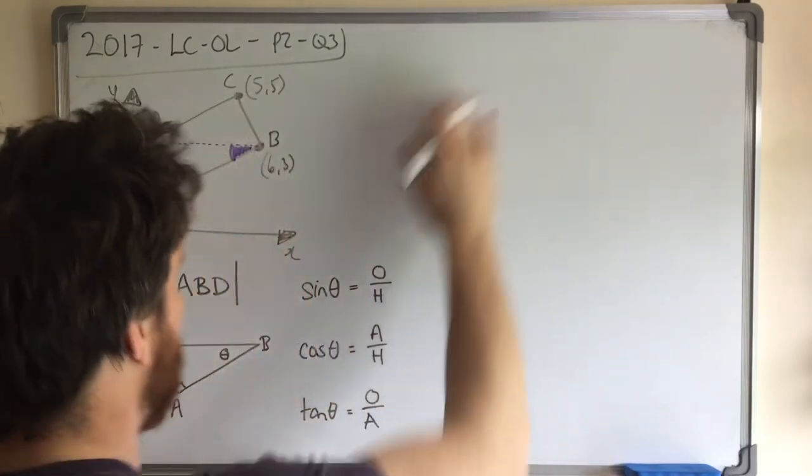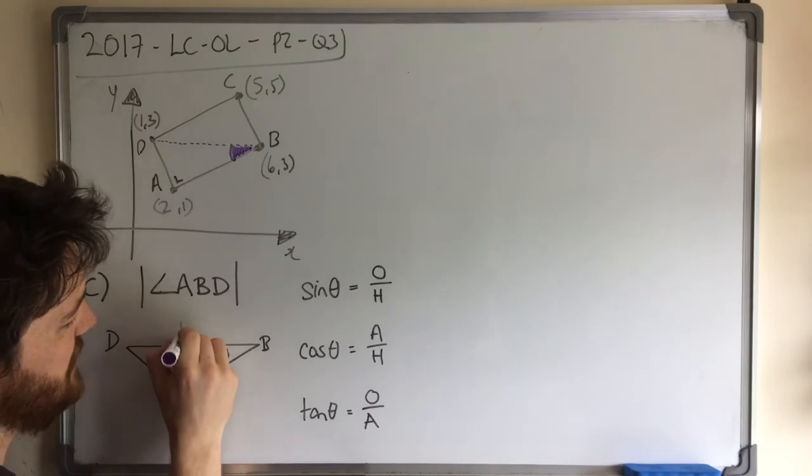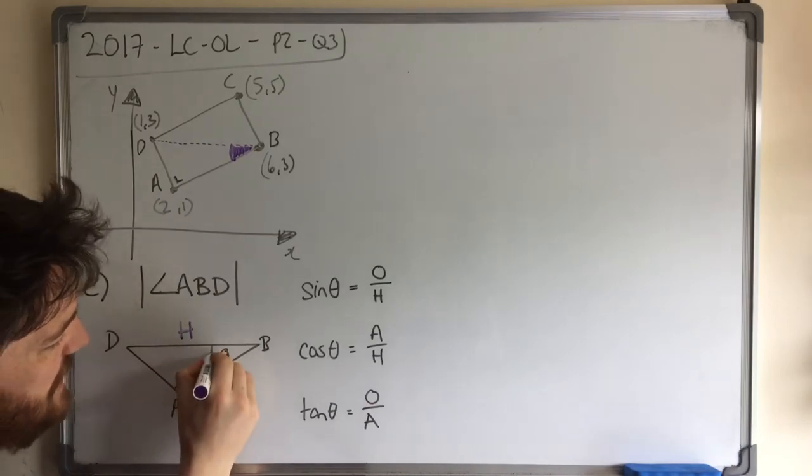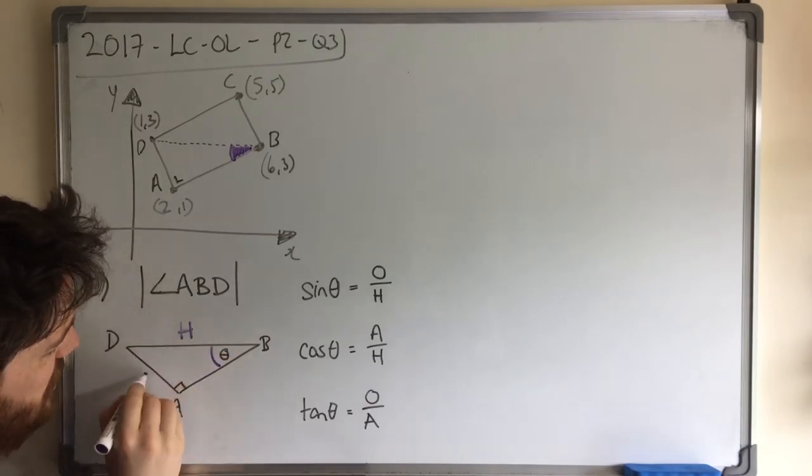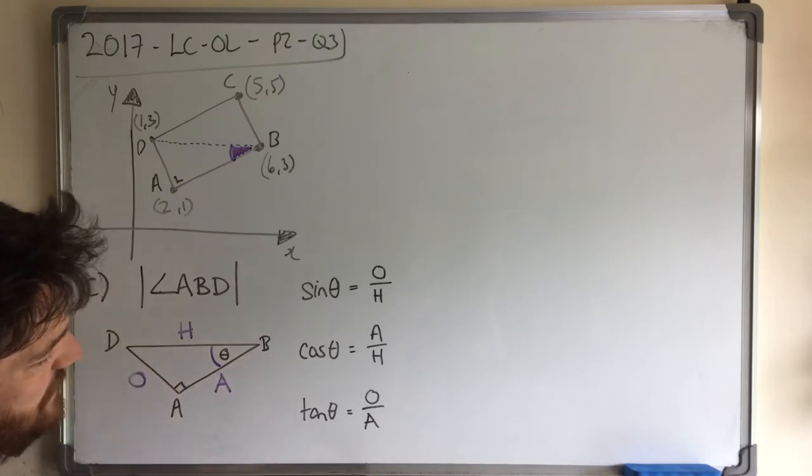Now let's try it for this one here. The longest side is from D to B, so that's my H. This is the angle. So it's pointing to the side opposite. So this is my opposite, and this is my adjacent.